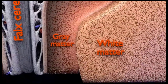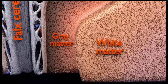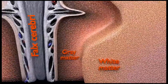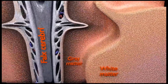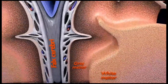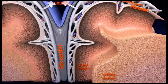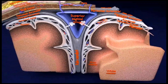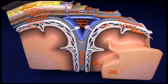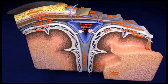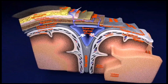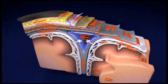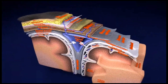Two additional folds are called the falx cerebelli, which separates the right and left cerebellar hemispheres, and the diaphragma sellae, which covers the hypophysial fossa of the sphenoid bone. It contains a small opening for the passage of the stalk of the pituitary gland.